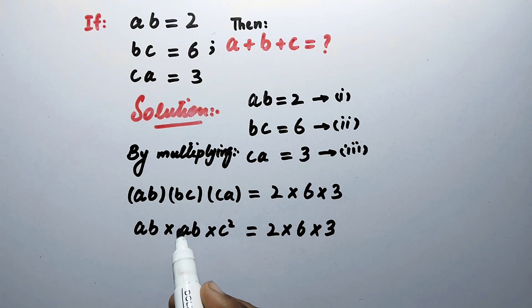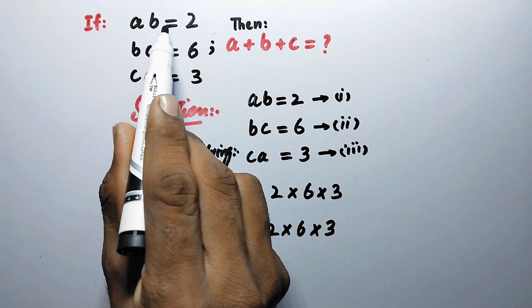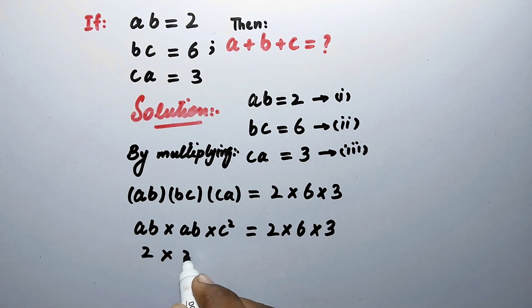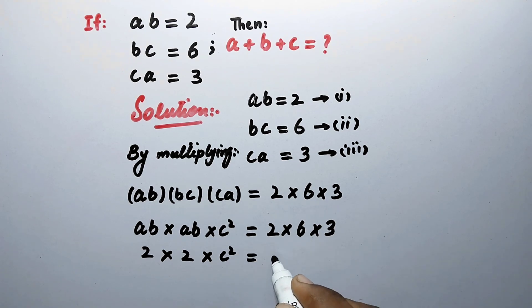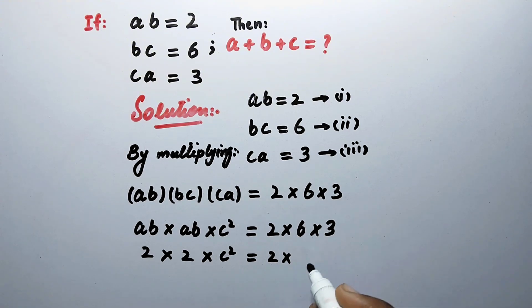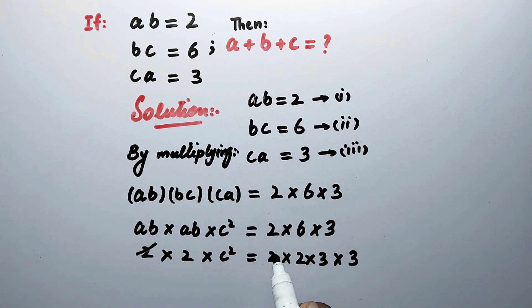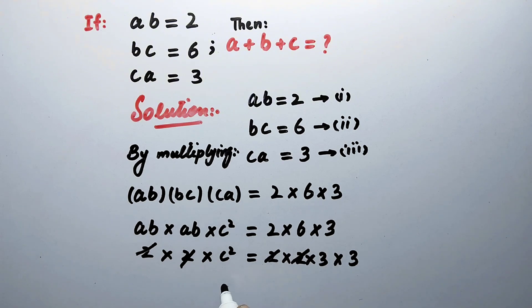Now from equation 1, the value of a·b is equal to 2, which we will put in this equation. So here we can write 2 times 2 times c squared is equal to 2 times — we can write 6 as 2 times 3 — times this 3. We cancel this 2 by this 2 and this 2 by this 2.